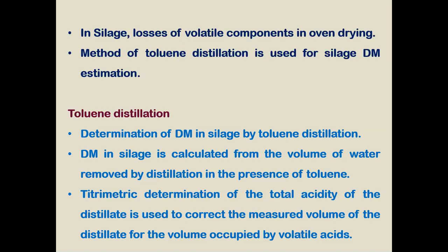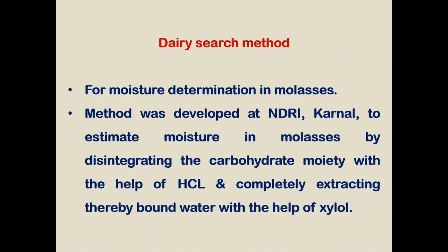The toluene distillation method is used for silage dry matter determination. The dry matter in silage is calculated from the volume of water removed by distillation in the presence of toluene. A titrimetric determination of the total acidity of the distillate is used to correct the measured volume for any volatile acids present in the silage feed.